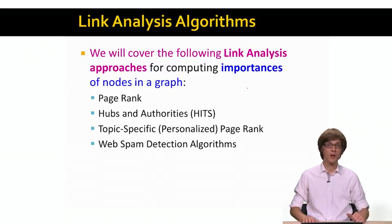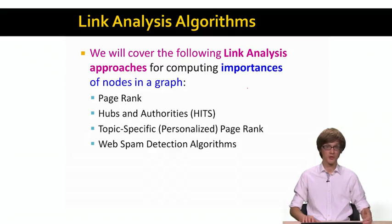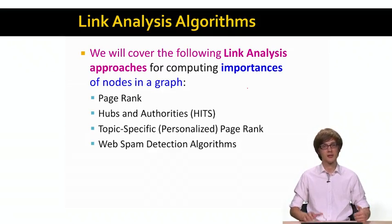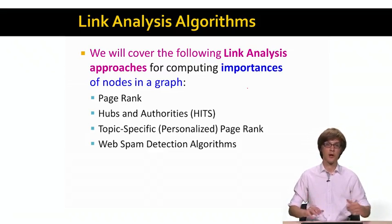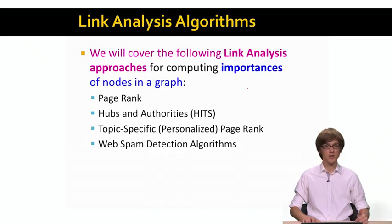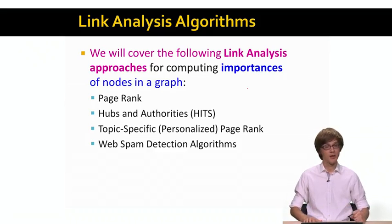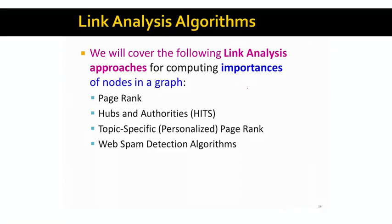The first approach we will look at is called PageRank, the algorithm behind the initial implementation of the Google search engine. We will also look at another algorithm called Hubs and Authorities, where there are two types of web pages: hubs and authorities that are good sources for given topics. Then we will look at extensions including topic-specific or personalized PageRank, and we will apply these ideas to web spam detection, where spammers manipulate the structure of the web graph to make some web pages seem important even though they are not — essentially boosting the importance of certain pages.